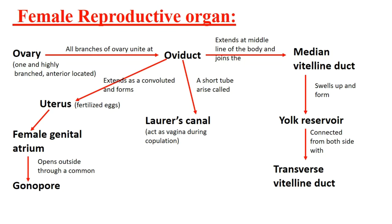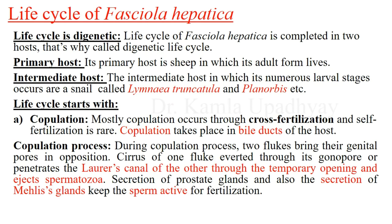Now let's see the life cycle of Fasciola hepatica. It is a digenetic life cycle because it completes within two hosts. The primary host is sheep, where it lives as an adult and lays eggs. The secondary or intermediate host is the snail Lymnaea truncatula, Planorbis, or Bulinus. The life cycle starts with copulation via cross fertilization, which always takes place in the bile ducts of the primary host.